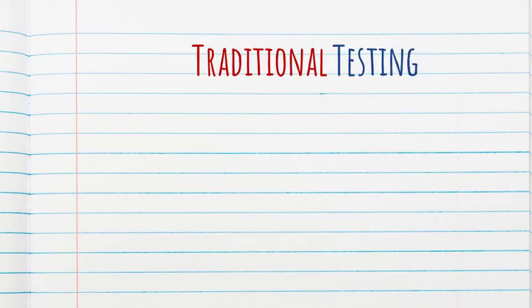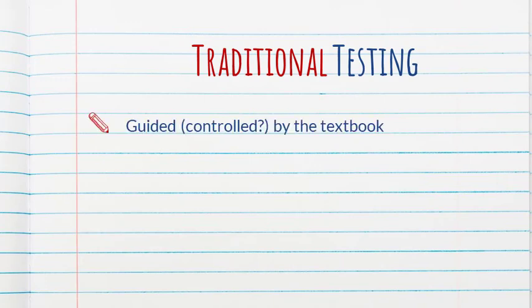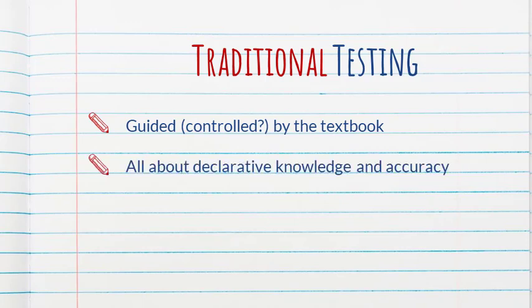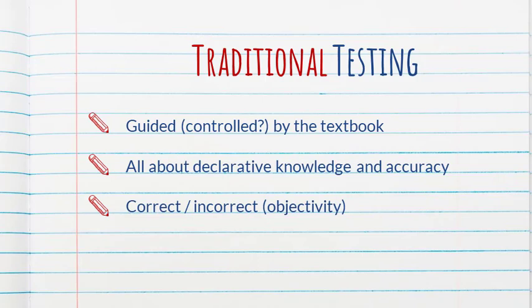The authors begin by pointing out issues with traditional written tests — namely that they tend to be guided by the textbook to the point that it feels very constraining. Students are expected to learn specific words and say things in a specific way. The purpose of the assessment becomes all about determining how much chapter content students can remember, focusing on declarative knowledge and accuracy — correctly applying rules — rather than using language for a communicative purpose. Responses tend to be correct or incorrect, which is supposed to ensure objectivity. You assign a grade based on how many items they got right, and that's that.